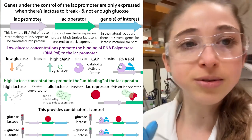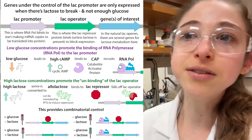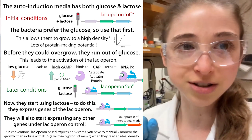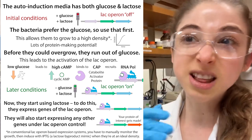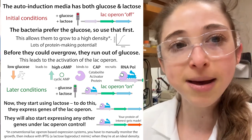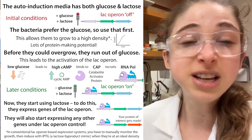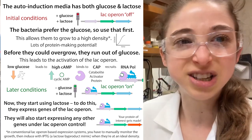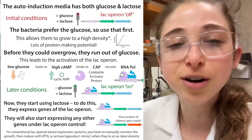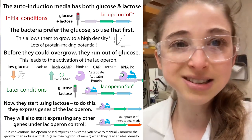So you have this dual regulatory system. The way autoinduction works is you have media with the right amounts of glucose and lactose so the bacteria grow to the density you'd normally induce them at. But instead of having to add IPTG, at that point the glucose is depleted and lactose is present, so they just switch. You don't have to monitor anything, don't have to worry about overshooting, or tweak levels.